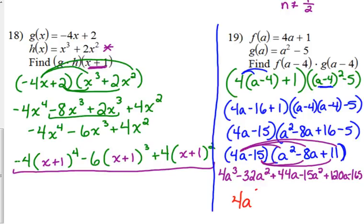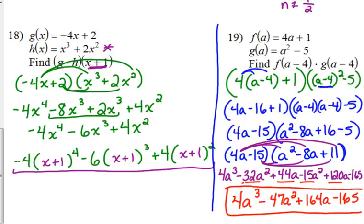Almost there. Combine like terms. 4a cubed minus, negative 32 minus 15, negative 47a squared. 44 plus 120, 164a minus 165. And that is the final answer. So you can do it either way. You can multiply the two functions first, then plug in the expression. Or you can plug in the expression first, and then multiply the two functions. So whichever one works better for you. You should get the same answer either way.